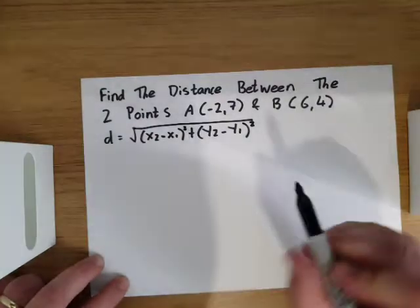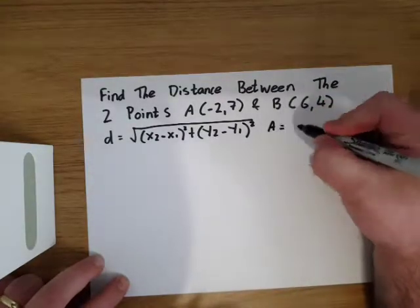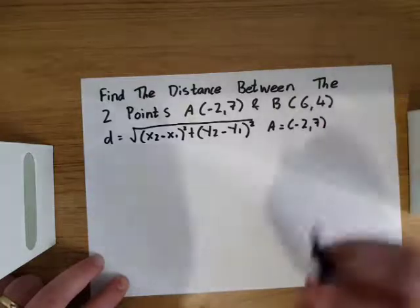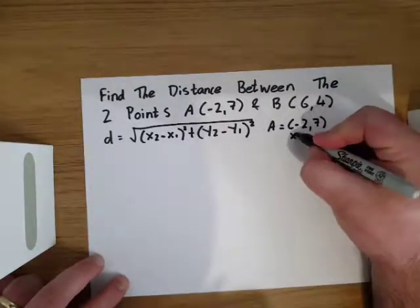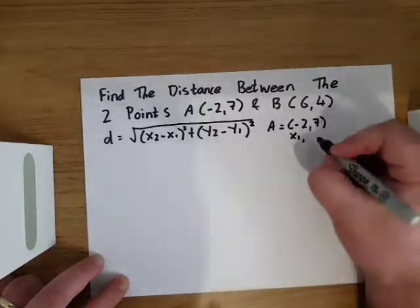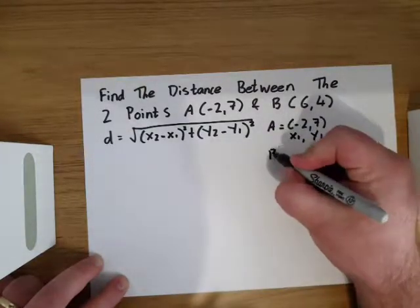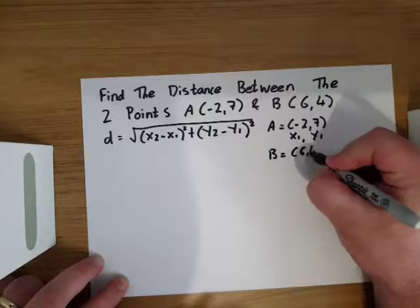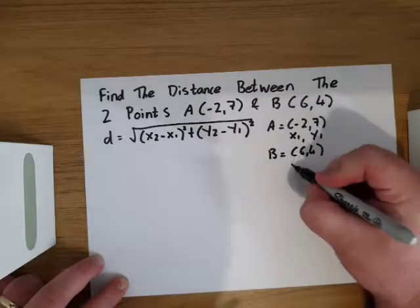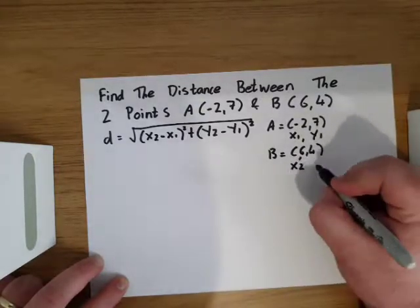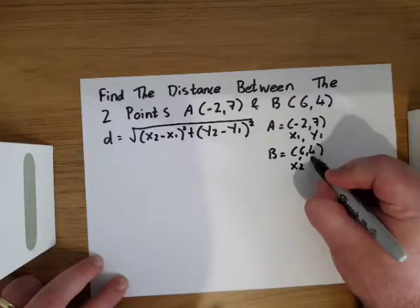So first of all, we take A, which is (-2, 7), and we label -2 as x1 and 7 as y1. We then take point B, which is (6, 4), and we label x2 as 6 and y2 as 4.